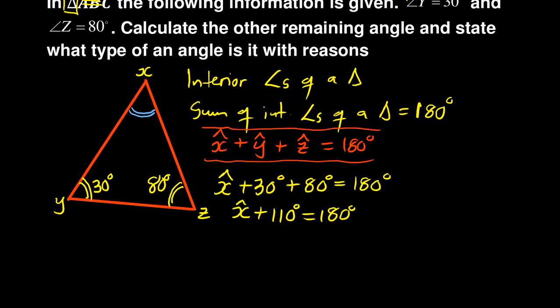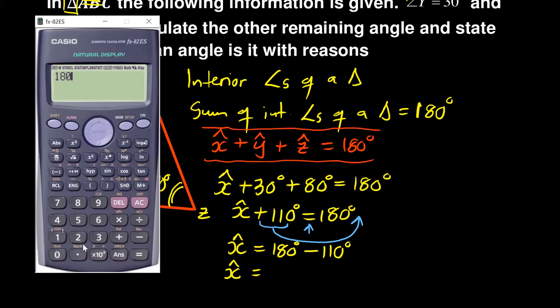What you need to do is transpose - take the positive 110 to the other side of the equal sign. The moment it jumps the equal sign, it changes from positive to negative. So angle X equals 180 minus 110 degrees, and angle X equals 70 degrees.